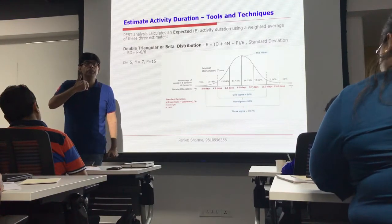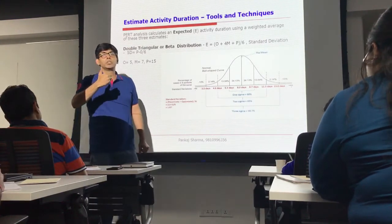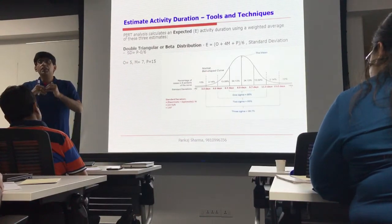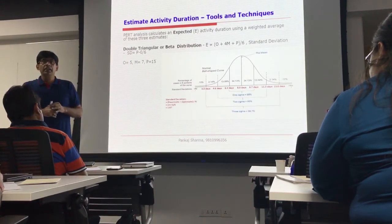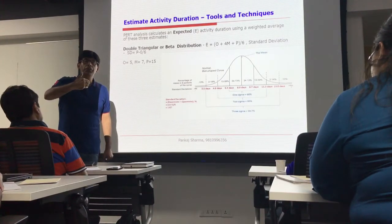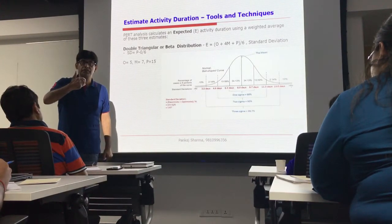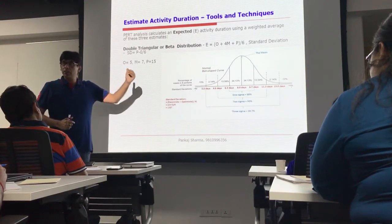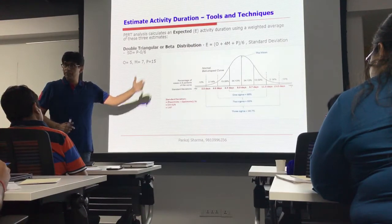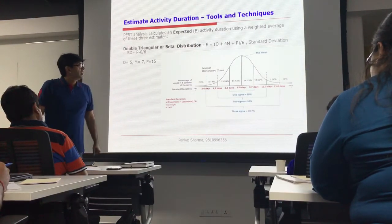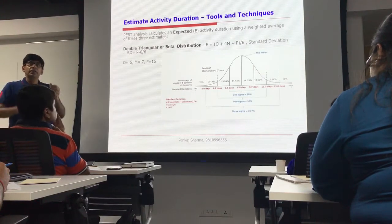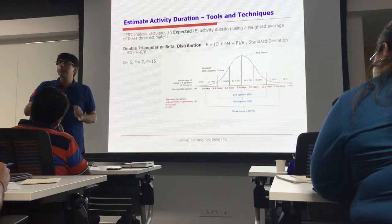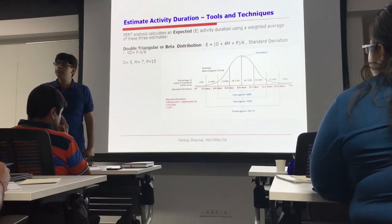Now let's assume that your data is randomly distributed. When you plot the curve of your historical data it takes a shape of a beta distribution or a normal curve, as depicted on the screen. If the data takes a bell curve or normal distribution curve, we also call it PERT — Program Evaluation and Review Technique.